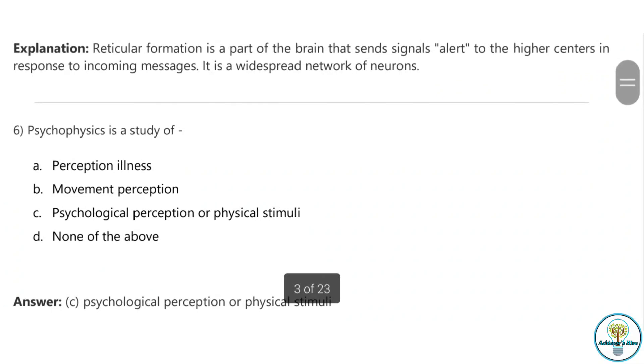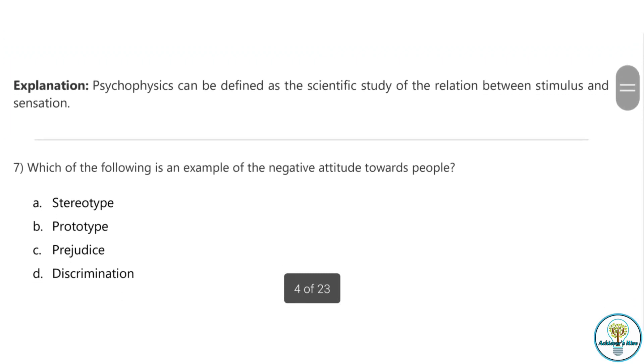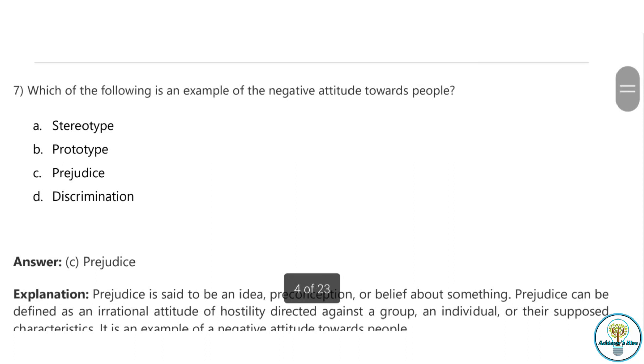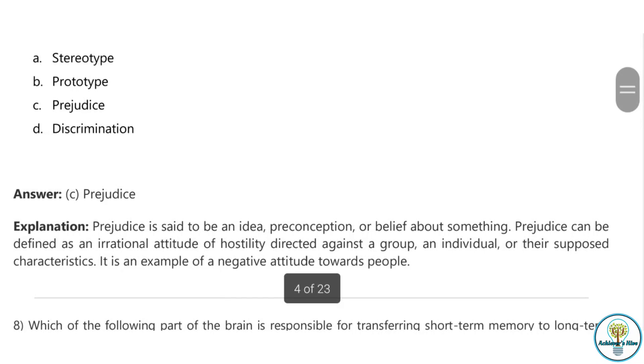Question six: Psychophysics is a study of which part? The answer is psychological perception of physical stimuli. Question seven: Which of the following is an example of negative attitude towards people? Stereotype, prototype, prejudice, discrimination - these all terms are from social psychology. When we create negative attitude towards people, it is known as prejudice. Prejudice can be defined as an irrational attitude of hostility directed against a group, an individual, or their supposed characteristics.